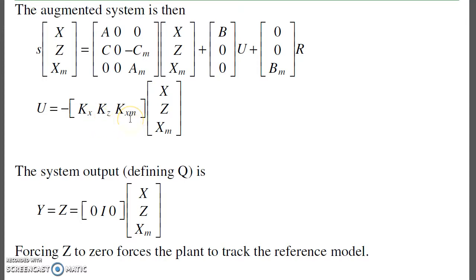I now want to find the feedback gains times x times C times X model, basically find full state feedback to force the servo states to zero, or the input of the servo state to zero, forcing the reference model to track the plant. In that case, the system output will just be the servo state.